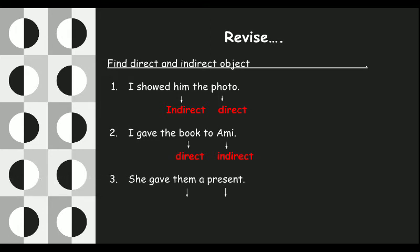Third: 'She gave them a present.' Tell me what 'them' will be and what 'a present' will be — just use the comment section quickly. 'Them' will be the indirect object and 'a present' will be the direct object. This helps me know how many of you have learned direct and indirect object.